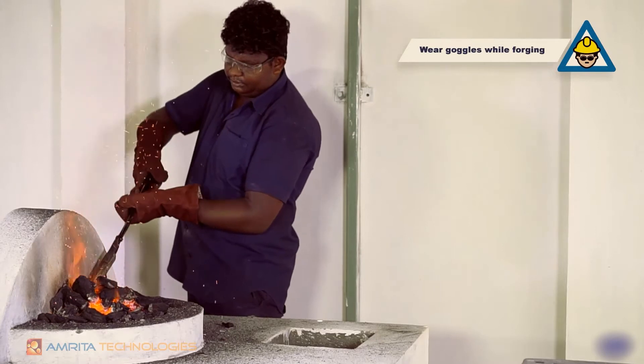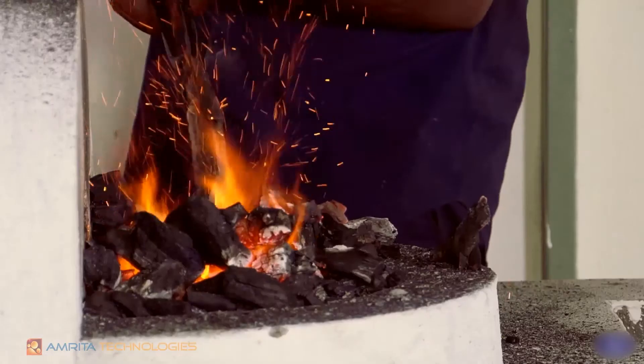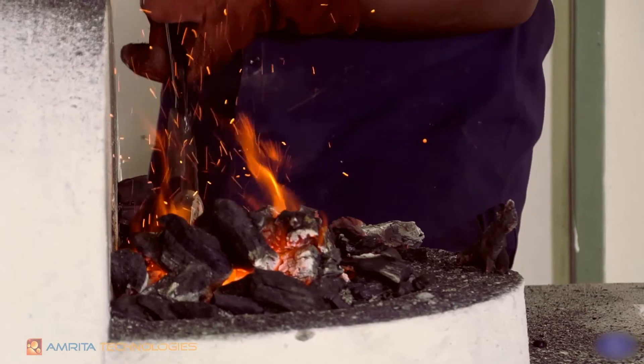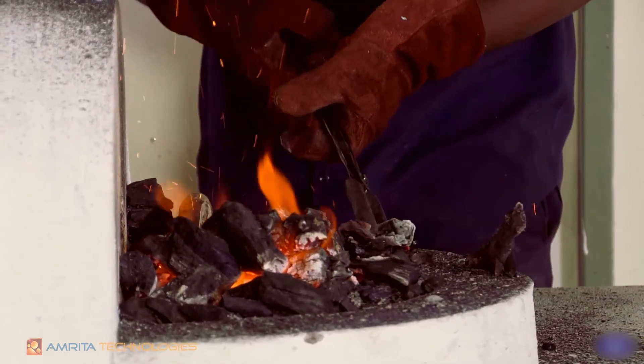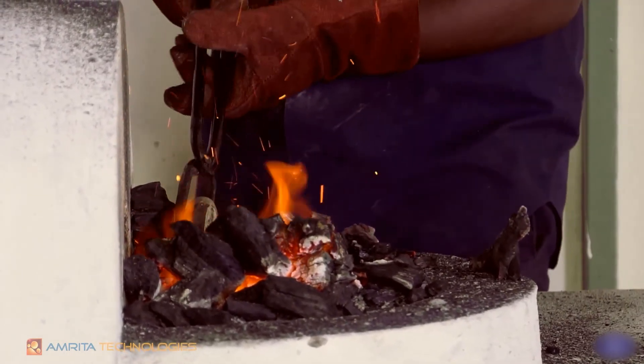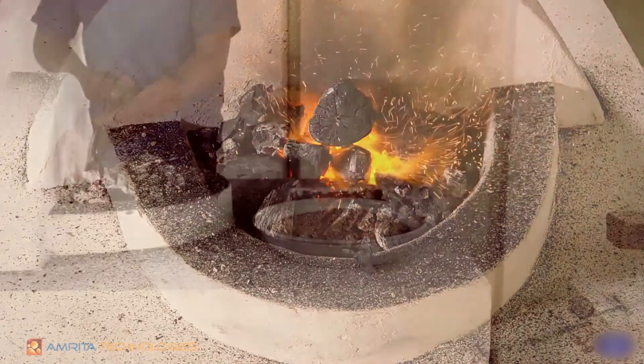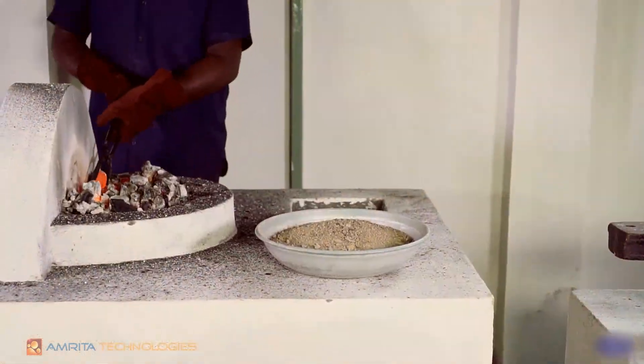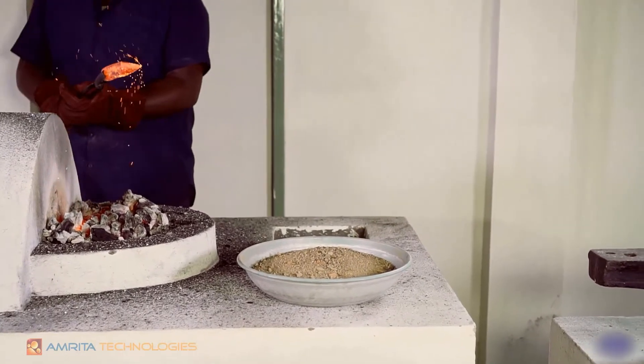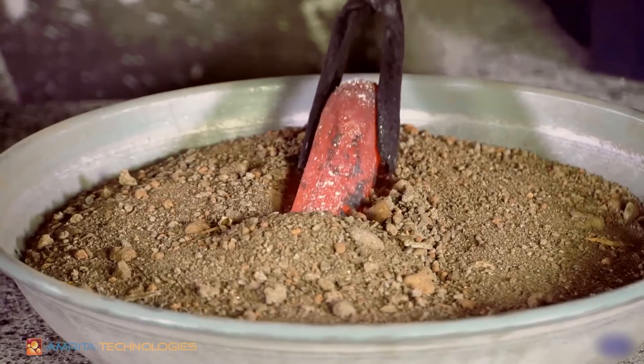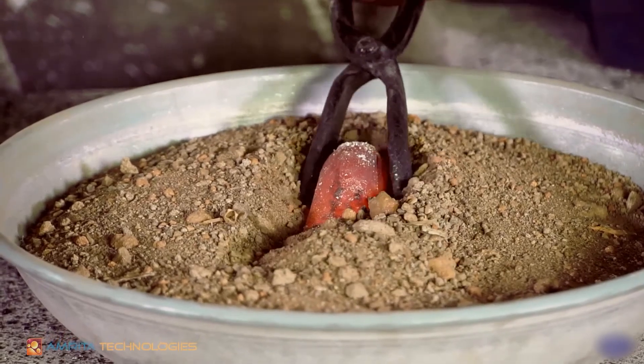Reheat the forged chisel uniformly along its full length to a cherry red color for annealing. Insert the whole chisel into dry sand or lime powder for slow cooling and annealing.